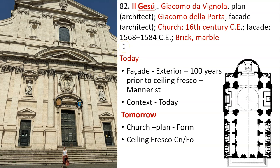Now we'll talk about Il Gesù — specifically the facade, the exterior front. There's a photo of me there just to show you the scale; this is very big. The exterior was done about a hundred years prior to the ceiling fresco. The church was started first, then the facade, and a hundred years later the ceiling fresco was added. So the facade is Mannerist, while the church interior and ceiling fresco are in the broader Baroque style. Today we'll cover the facade and its context; tomorrow we'll move into the church form and the ceiling fresco.